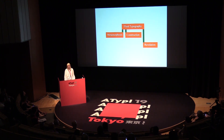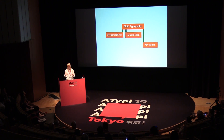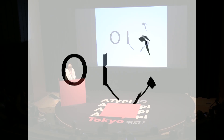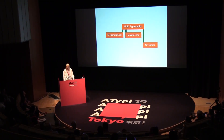The second subcategory of fluid typography is called construction. It is similar to metamorphosis, but in construction, letters are constructed from abstract independent shapes that we do not visually recognize beforehand. The fact that you don't recognize a shape before you recognize the letter leads to better visual letter recognition, better reading speed, and better comprehension.